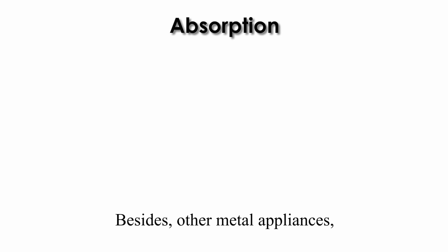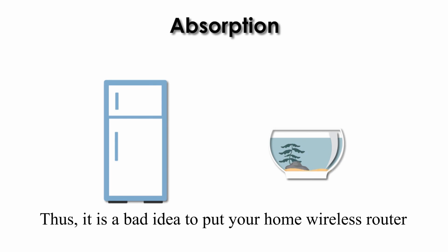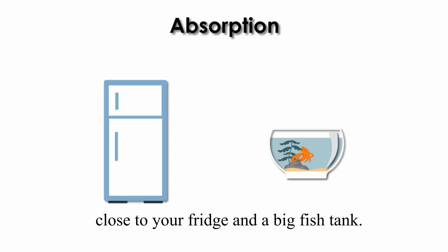Besides, other metal appliances like refrigerators absorb wireless signals. Thus, it is a bad idea to put your home wireless router close to your fridge and a big fish tank.